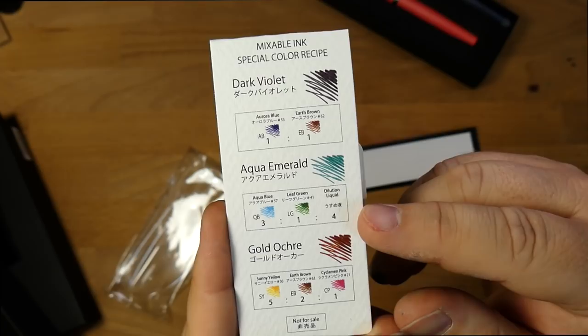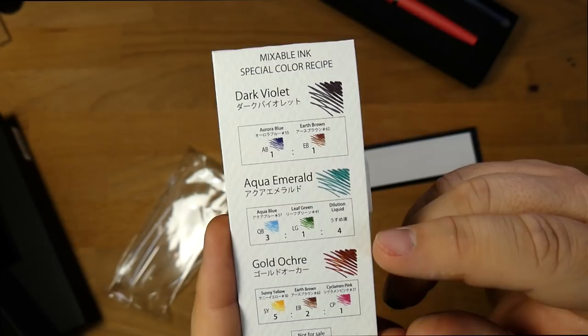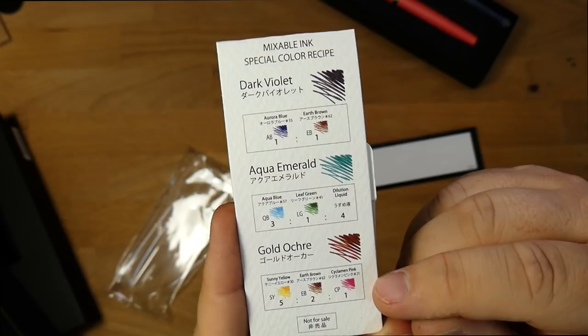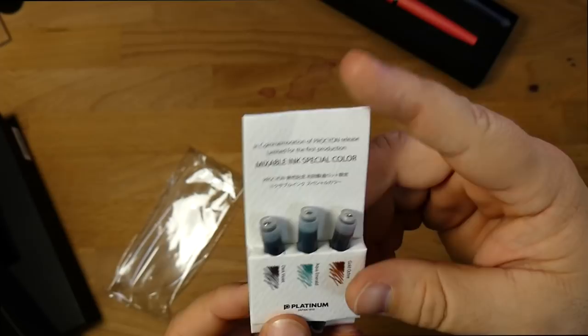Aqua blue and leaf green. It's a three-to-one mix. And some dilution liquid, which is interesting, which is just really distilled water, really. But you can buy dilution liquids from various places. And then gold ochre, which has got sunny yellow, earth brown, and cyclam and pink.